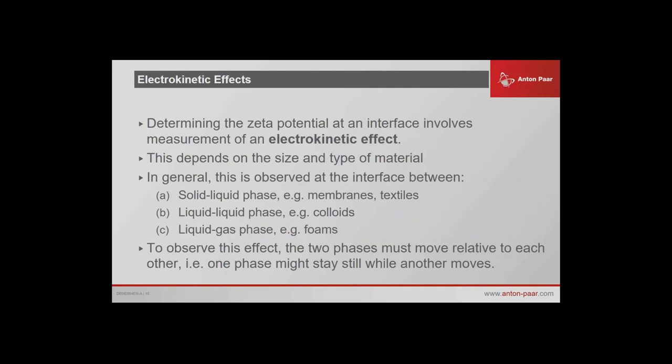An electrokinetic effect is what we use to measure a Zeta potential — it is something mechanical which causes shear of the charge, or something electrical that causes mechanical movement. You must do one or the other to have an electrokinetic effect. It depends on the size and type of material. If you have giant rocks, you can't move them, so you measure around them. If you've got colloidal systems, you can stream them across by applying a charge and they would move. The phases must move relative to each other — one could stay still while the other moves, or they can both move in opposite directions, but you must have movement to measure an electrokinetic effect.